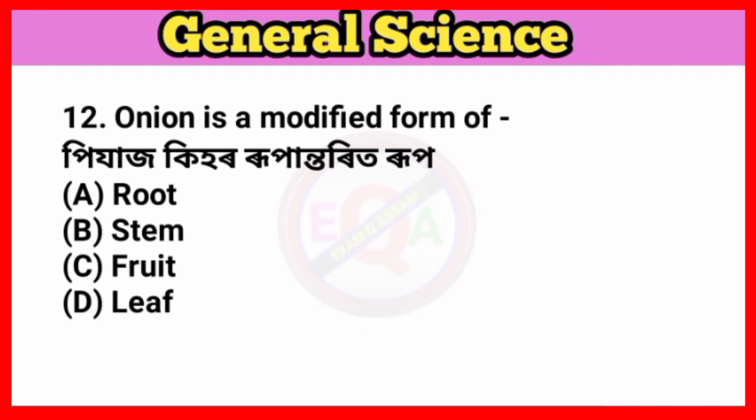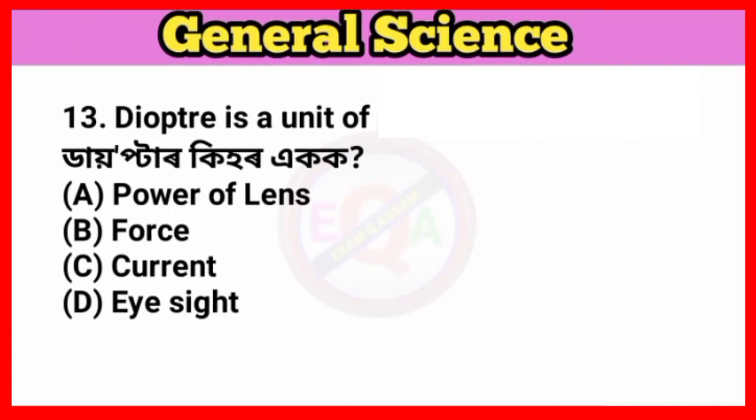Question number twelve: Onion is a modified form of what? Answer option B: Stem. Question number seventeen: Diopter is a unit of what? Answer option A: Power of lens.